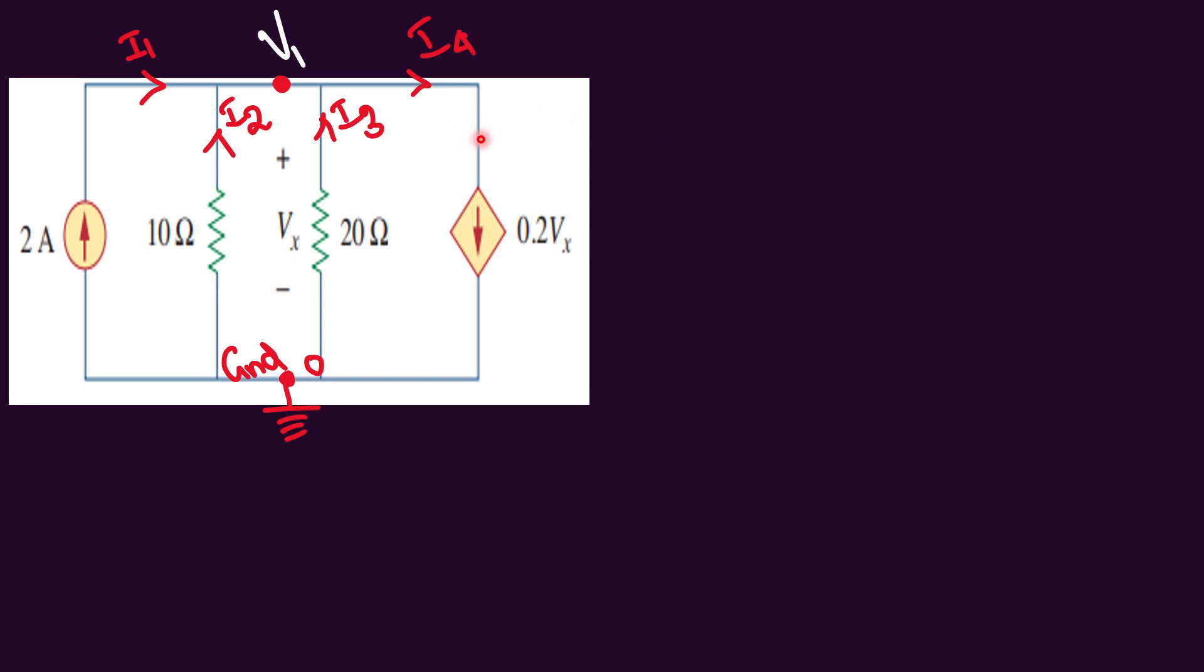We are going to solve using nodal analysis. First we have to identify the node. This is the reference node or the ground where the potential is 0 and then we mark this node as V1.